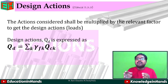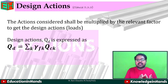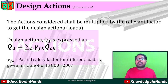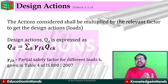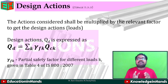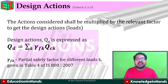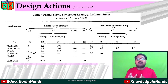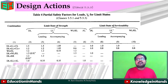Here γfk is the partial safety factor for different loads at k, given in Table 4 of IS 800-2007. Table 4 of IS 800 provides partial safety factors for loads γf for limit states. This table covers all possible load combinations according to IS 800 for limit state of strength and limit state of serviceability calculations.